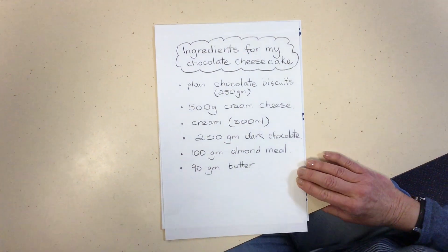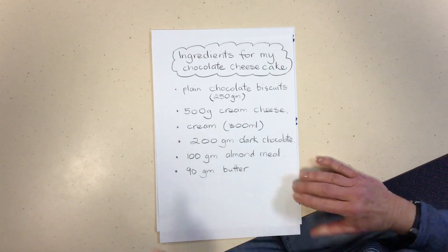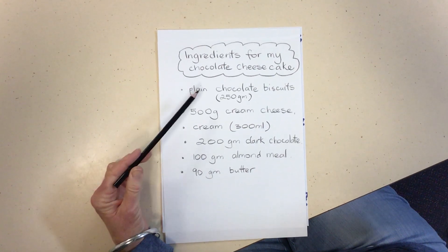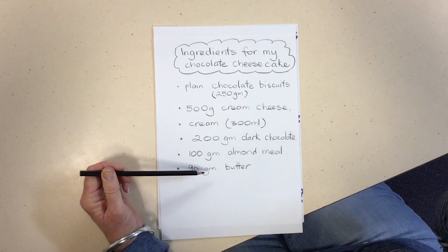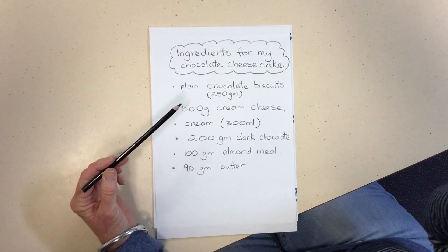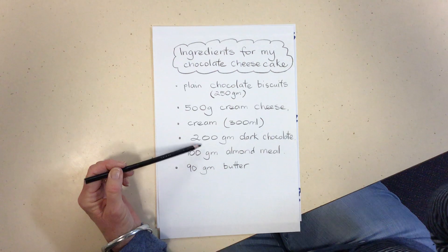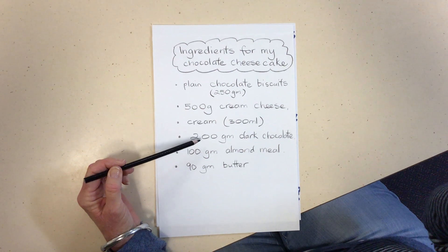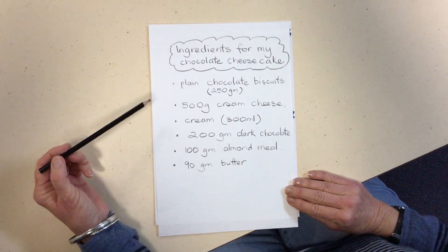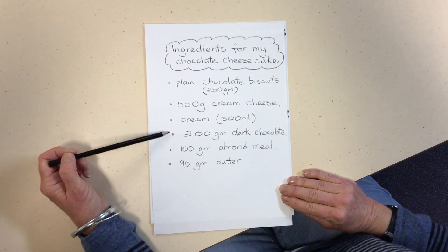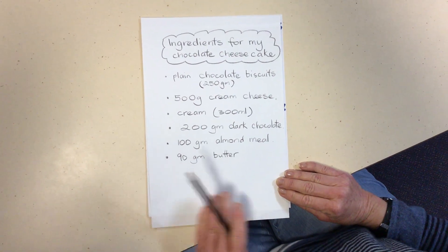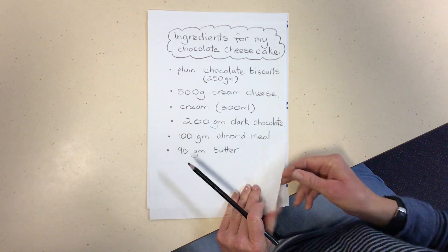Okay, I've made my list and I'm just checking that I have everything I need. Yes, I've got what I need to make the base for my chocolate cheesecake and I've got the other ingredients. So if you have a look, I used dot points for making that list. There are other ways you can make a list.